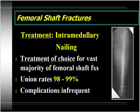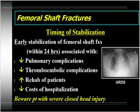Intramedullary nailing is the treatment of choice for the vast majority of femoral shaft fractures. It has a union rate reported anywhere from 98 to 99% with an infection rate of less than 2%. Early stabilization — within 24 hours post-injury — has been shown to be associated with decreased incidence of pulmonary complications, decreased thromboembolic complications, improved rehabilitation, decreased ICU stay, decreased hospital stay, and decreased overall cost of hospitalization. The caveat is to beware the patient with severe closed head injury — those patients are best managed with provisional fixation such as external fixation to avoid hypotension and hypoxemia in the operating room.